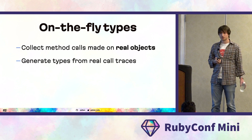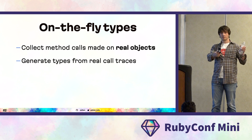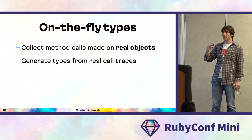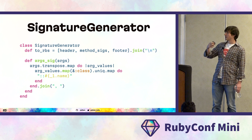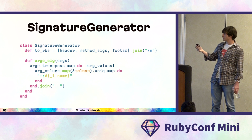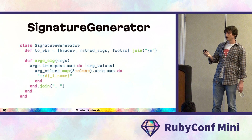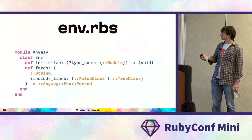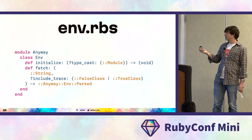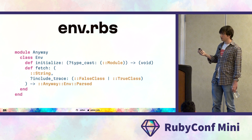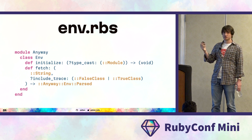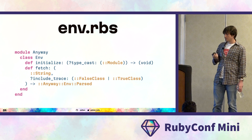The next step is generating types from these call traces. A call trace is a combination of past arguments — positional and keyword — and return values. For every call tuple, we generate a mapping of classes used and collect unique classes per argument, creating a union type in our signature. This is an auto-generated type signature for our Env class generated by executing the test suite. It's 100% correct — it matches the signature I wrote by hand.